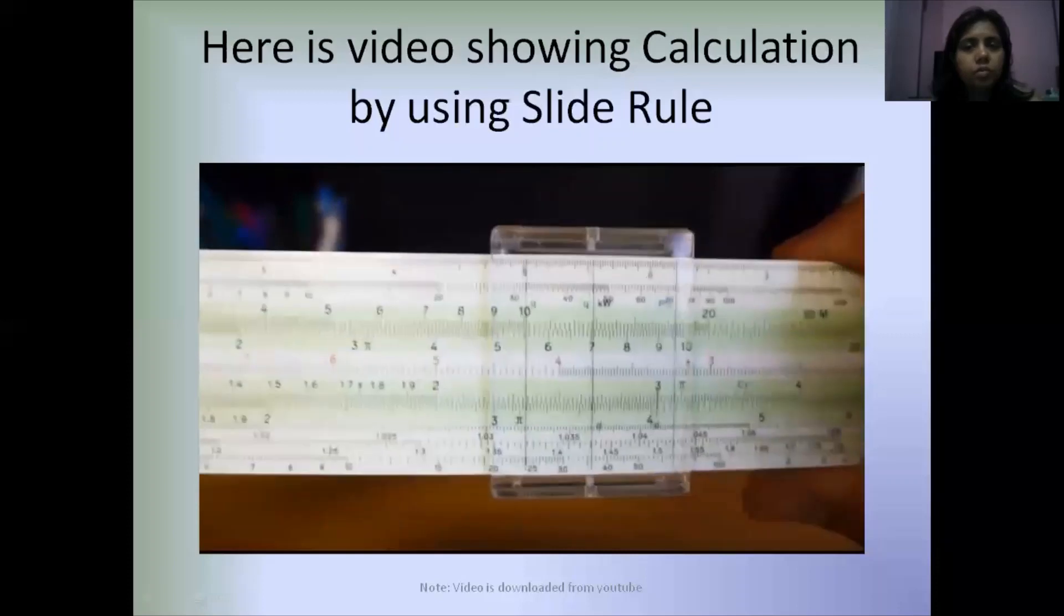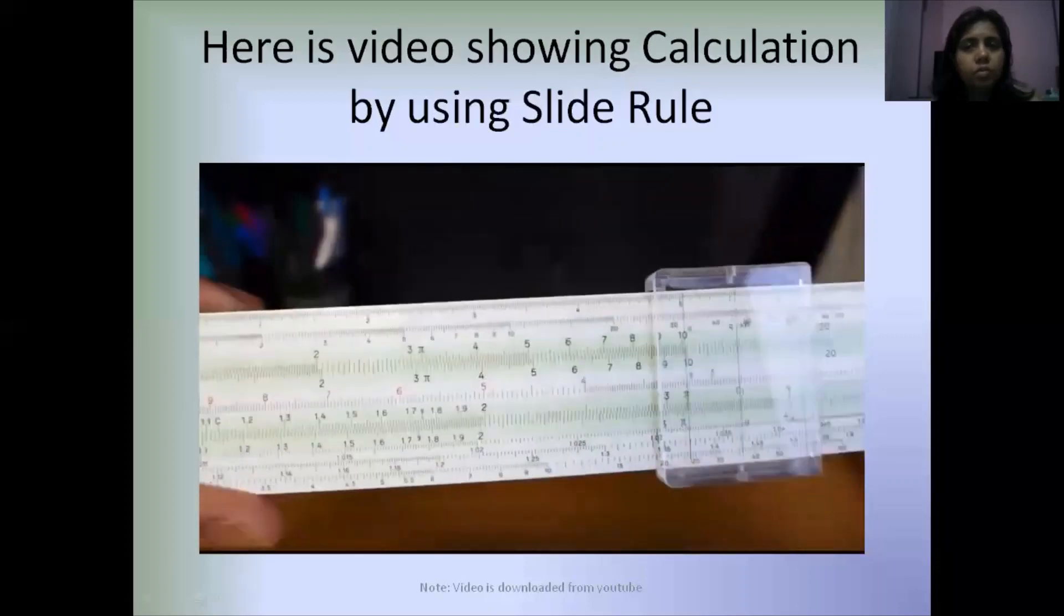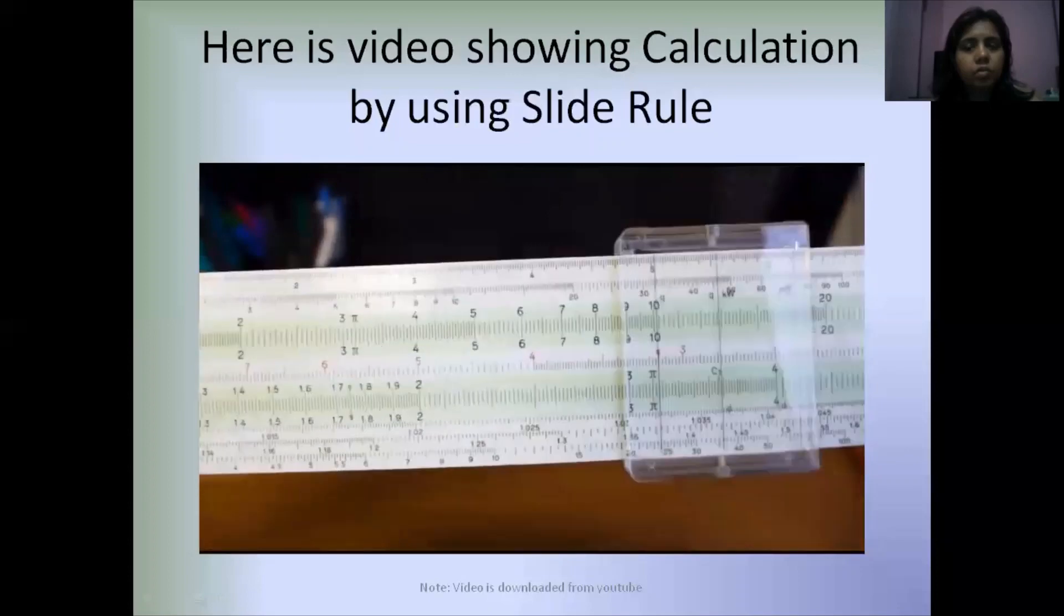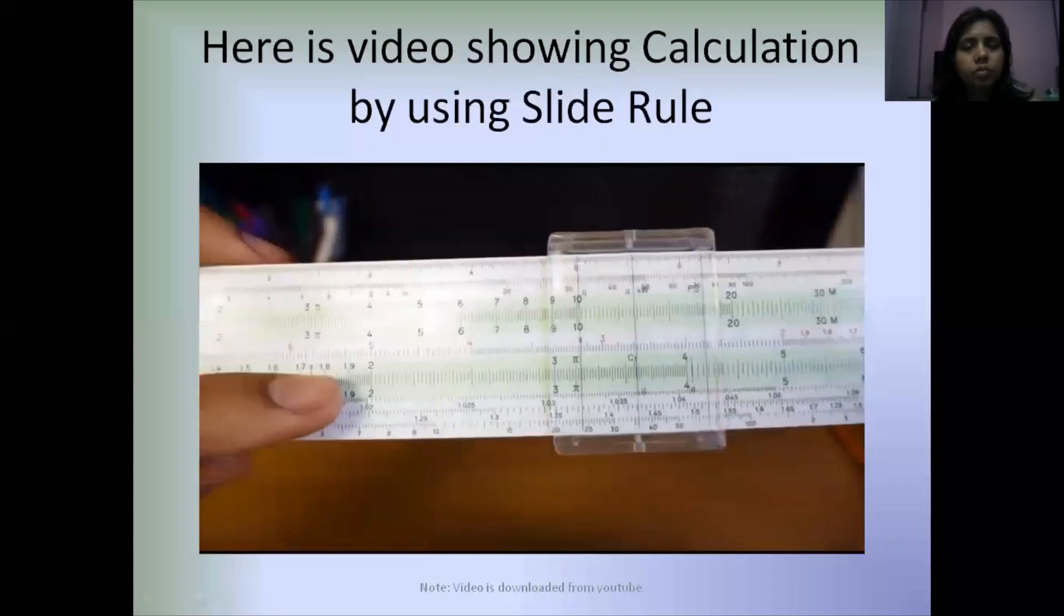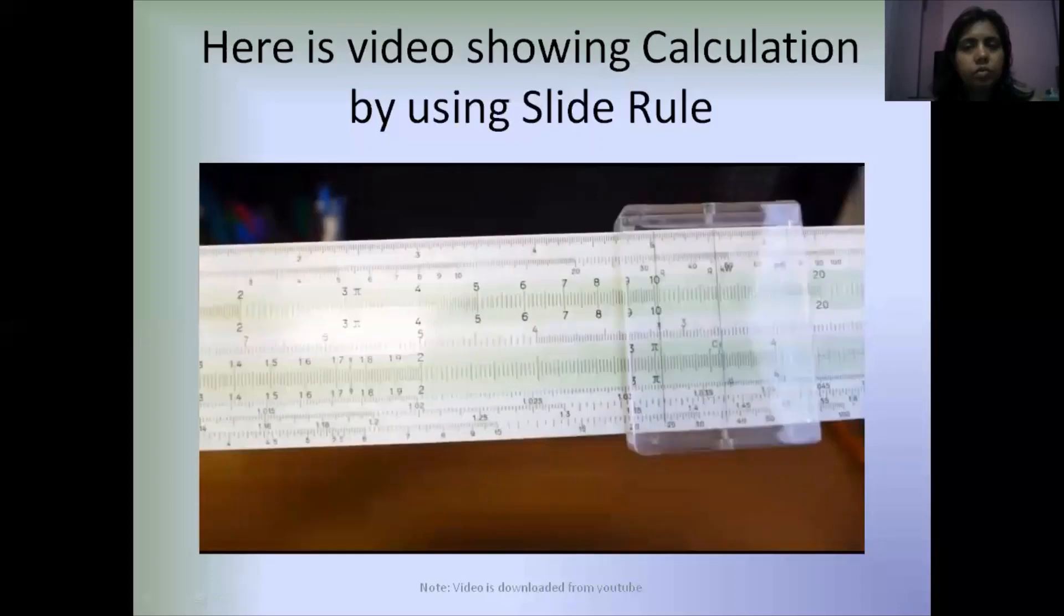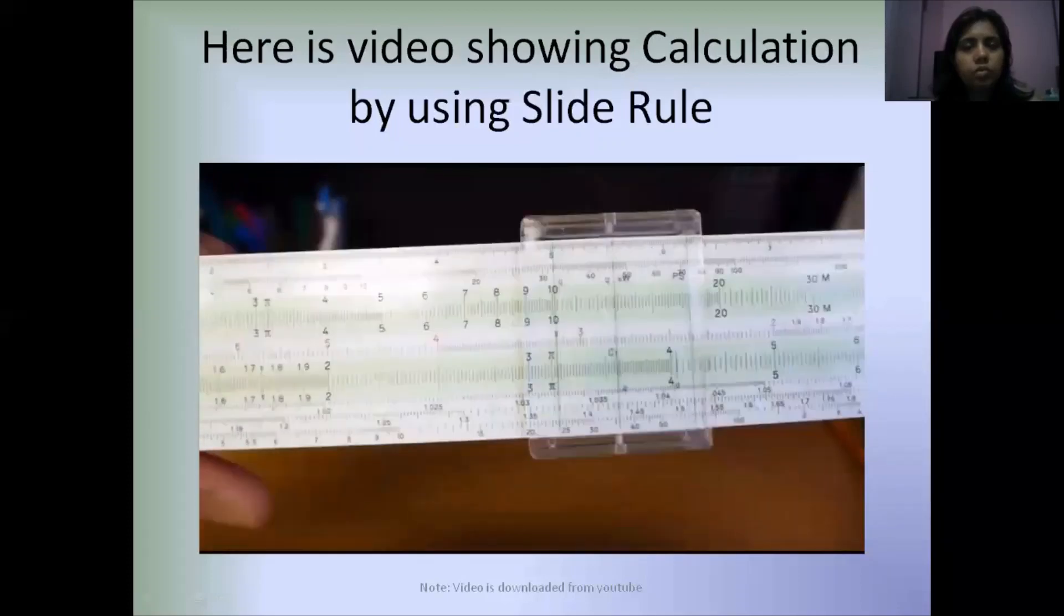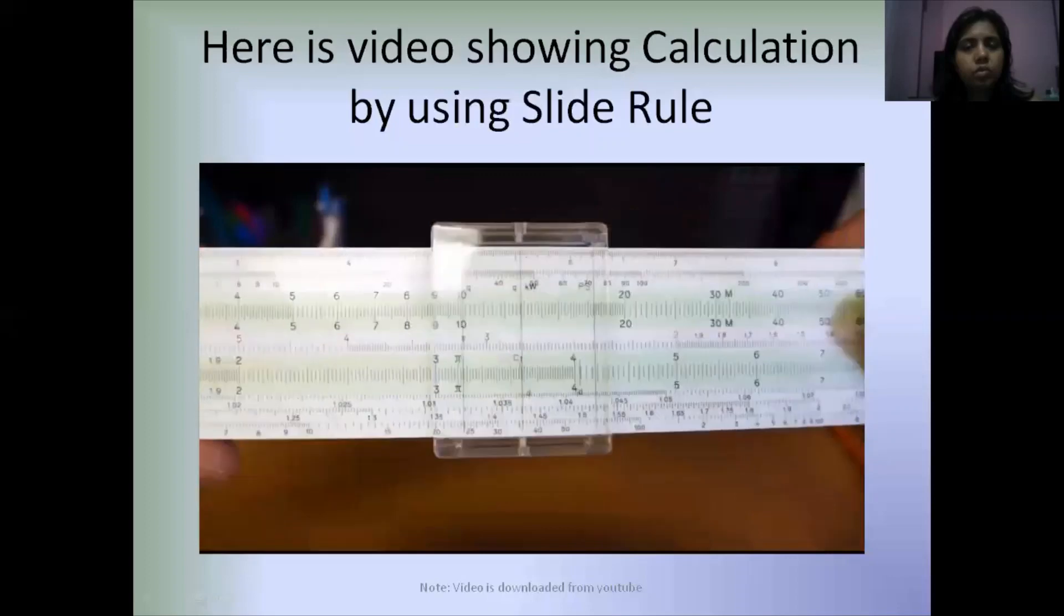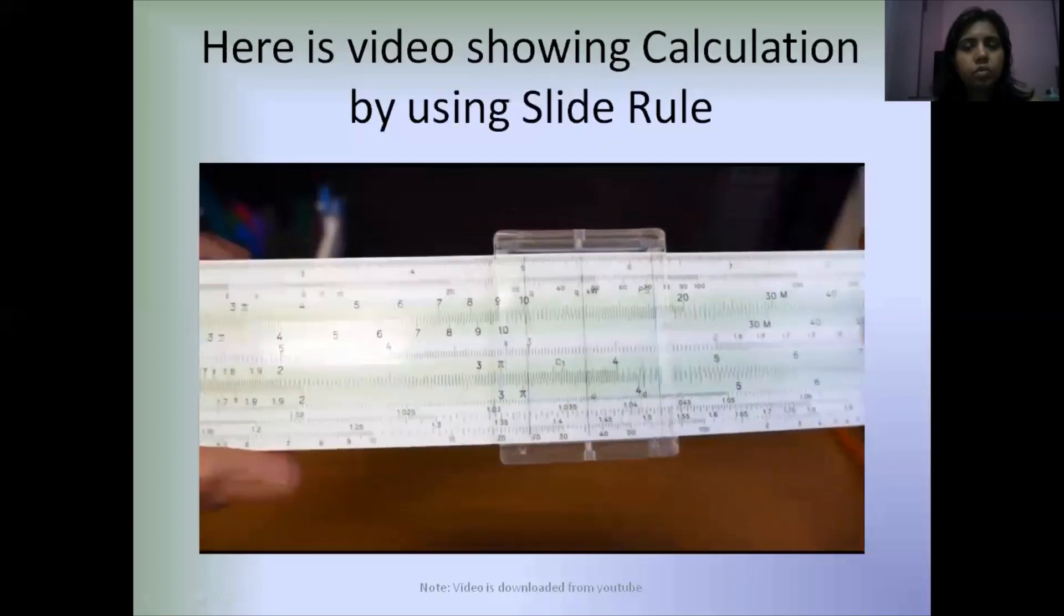Division on a slide rule is very similar, except that you kind of switch it around. For division, you put the top number of the fraction on the bottom and the bottom number of the fraction on the top, and you read the answer off one of the indices. For example, if I want to divide 2 by 3, I would put the 3 over the 2.